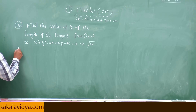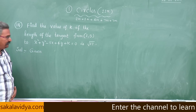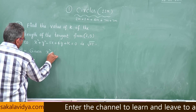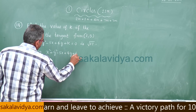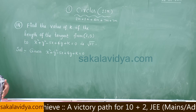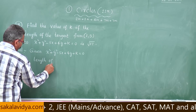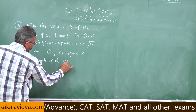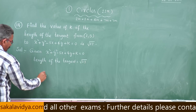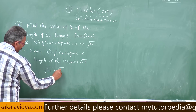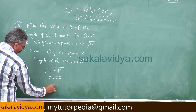The given equation of the circle is x² + y² - 5x + 4y + K = 0, and the length of the tangent is given as √37. So √S₁₁ = √37; squaring on both sides, S₁₁ = 37.